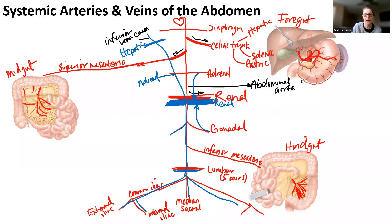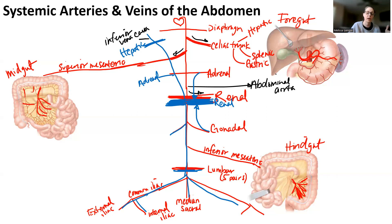At the end of the abdominal aorta and the inferior vena cava, both of them branch at roughly the L4 level. When they do, it becomes common iliac. Common iliac basically runs along the ilium, the bone. When it branches and goes inside, it becomes the internal iliac. And when it continues towards the outside of the body, it becomes external iliac.